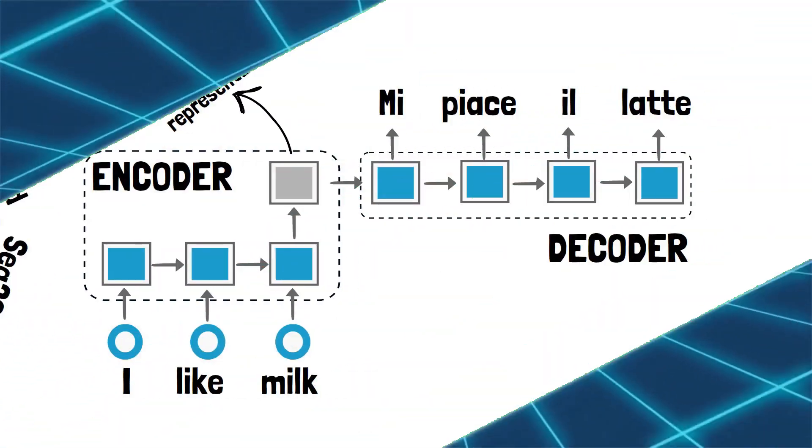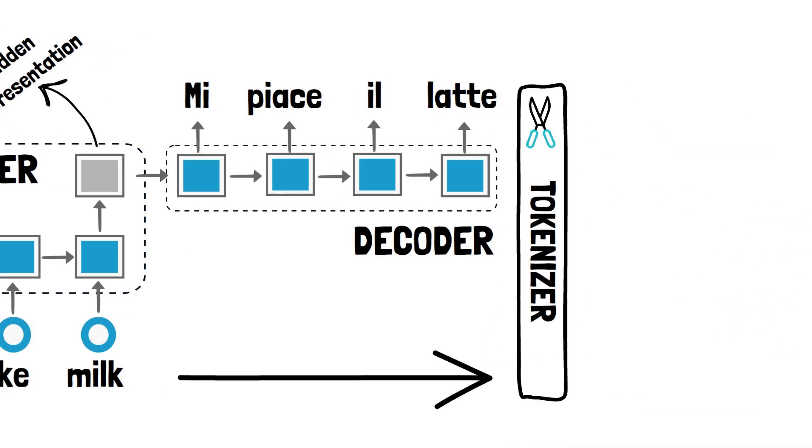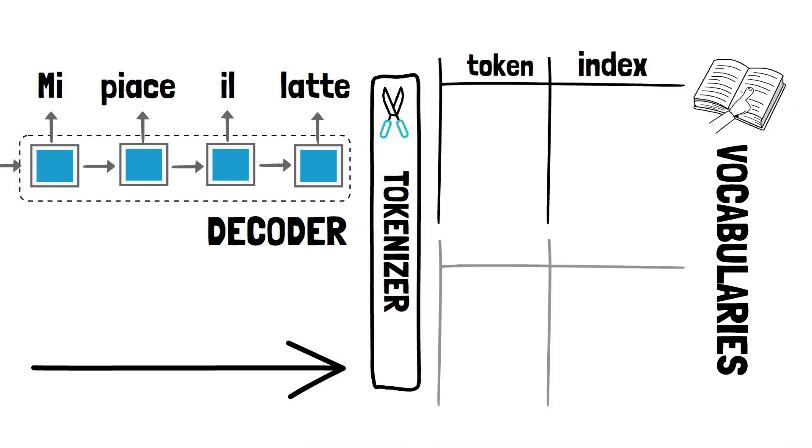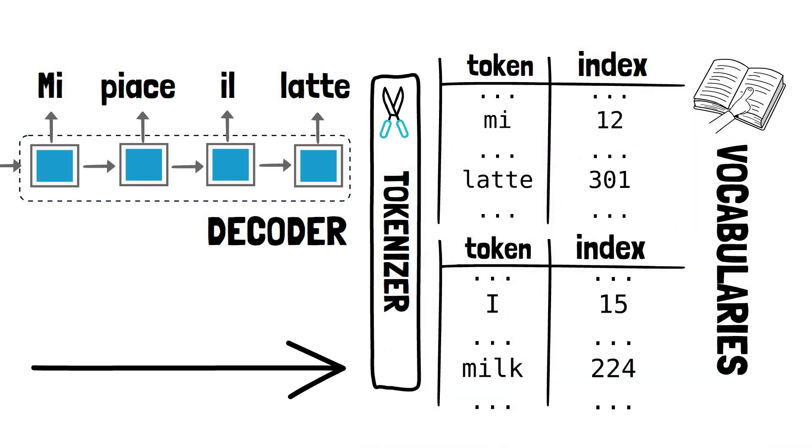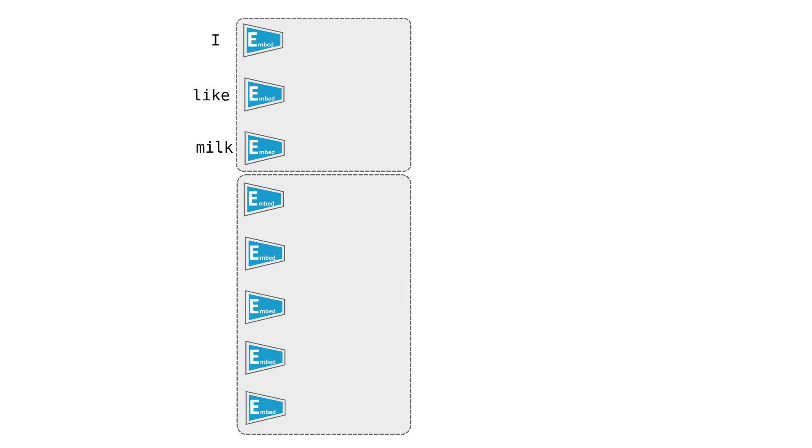Now that we understand the general encoder-decoder architecture, let's look at this in more detail by building a model to translate from English into Italian. As we did for our previous language model, we need to split the input into tokens and create a vocabulary. Only this time we will have two distinct ones, for the input language and for the target language. These vocabularies will likely also have a different number of tokens.